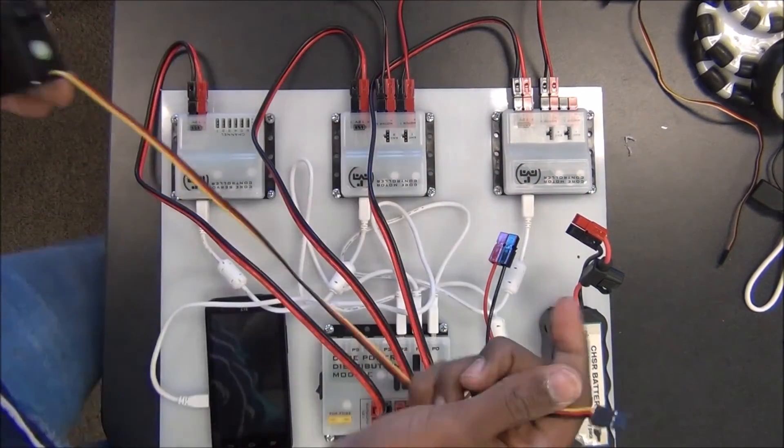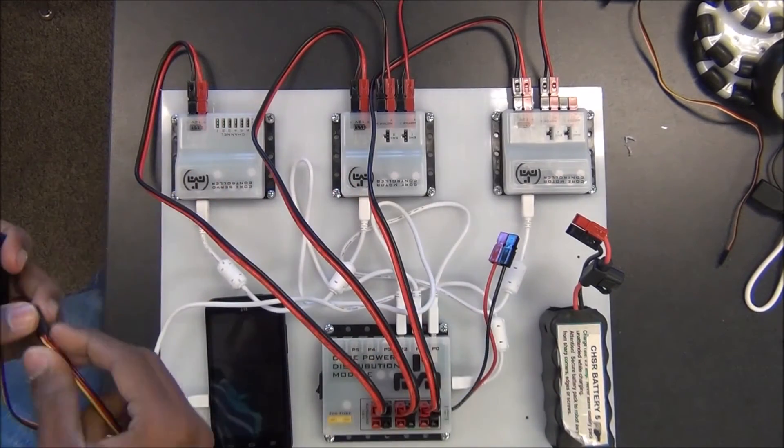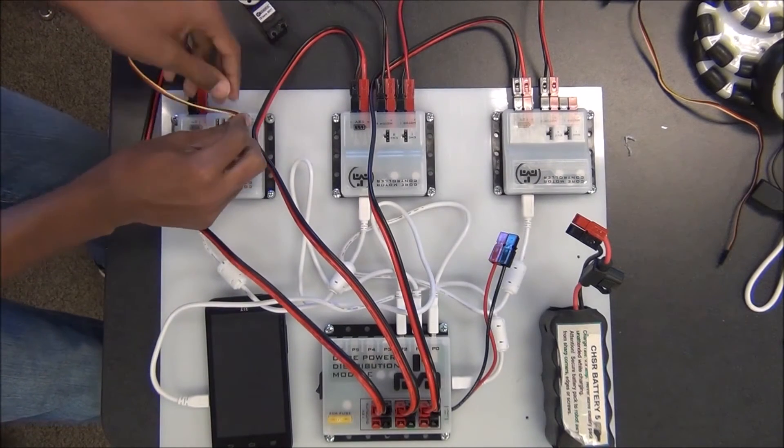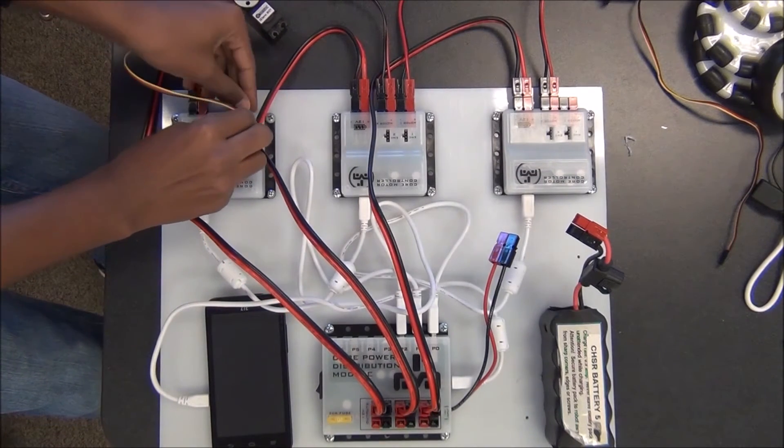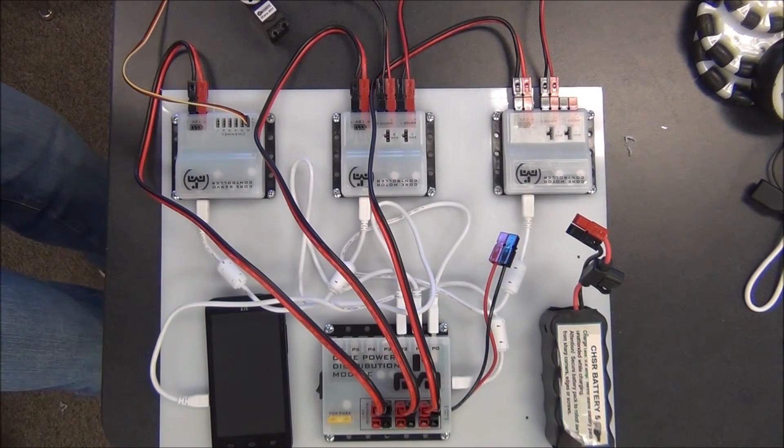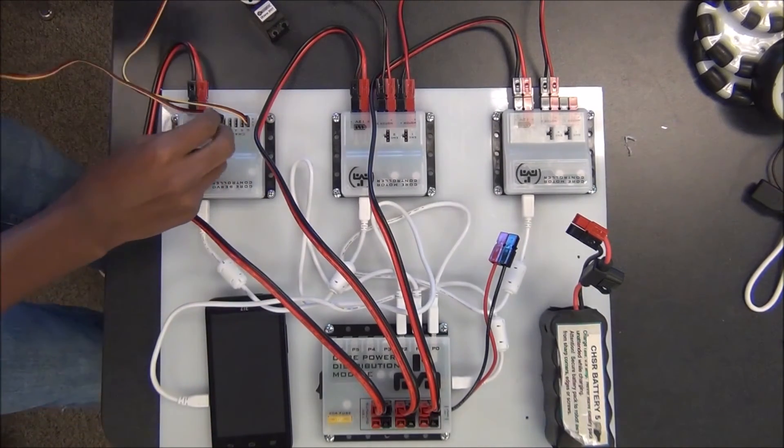And then I'm going to connect two servos in ports six and one to the servo controller. Make sure that you put the wires in the right way so the little markings on the edge of the servo controller, make sure you follow those markings.